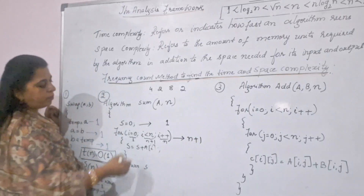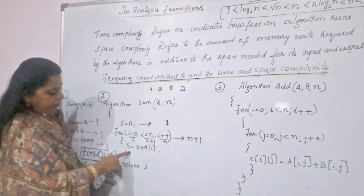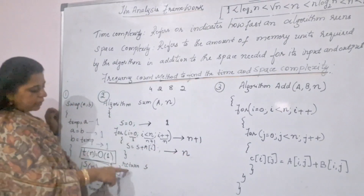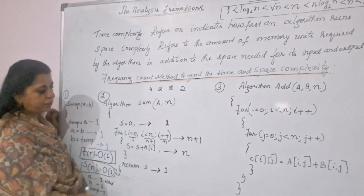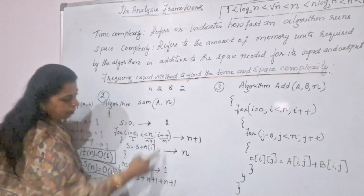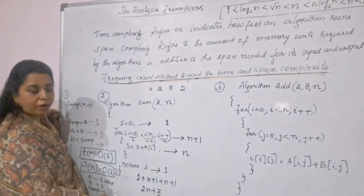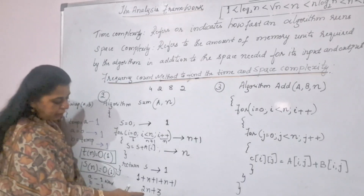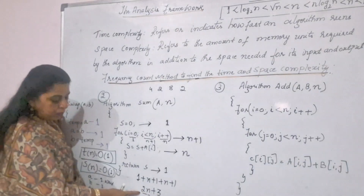The first statement is one, the for loop contributes n plus one. The inside statement of the for loop gets executed n number of times. Outside the loop there is a return statement which takes one unit of time. Adding up: one plus n plus one plus n plus one gives 2n plus 3. This polynomial function is what you got for this algorithm.